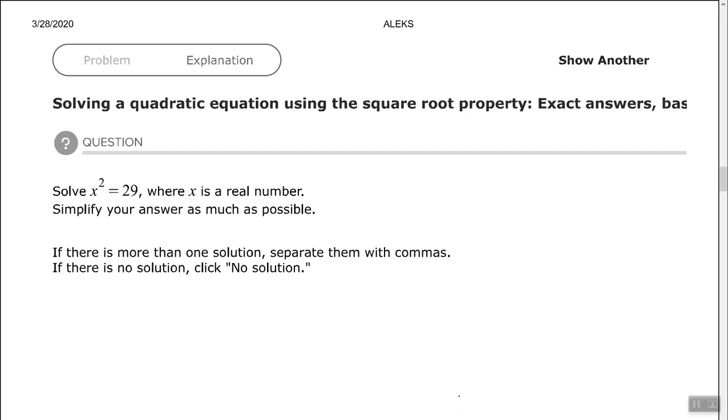Hey, good people, Arthur Morris here. Hope all is well. In this video we're going to look at solving a quadratic equation using the square root property. The exact answers in basic form. So it says solve x squared equals 29. So an exact answer, meaning that we do not want any decimal numbers.